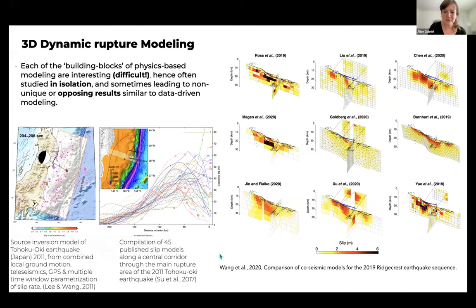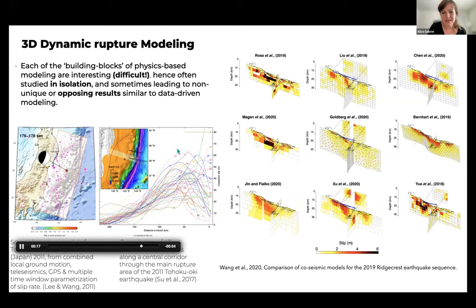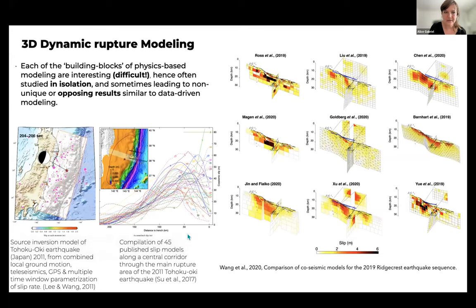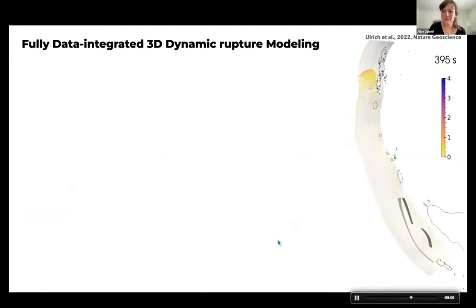This is one source model allowing for multiple slip rates in the inversion at each point for the Tōhoku earthquake fault, showing slip reactivation that is difficult to argue with in a purely data-driven approach. And here's a compilation of near-trench slip from 45 different slip models for Tōhoku, showing this huge variation. The proposed way out is to integrate observations and models, such as this integrated model for the 2004 Sumatra earthquake. But I want to talk about the challenges of doing so.